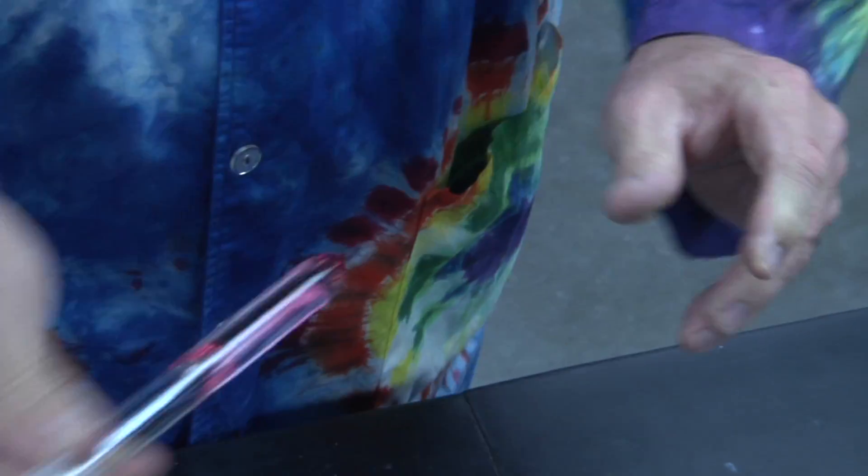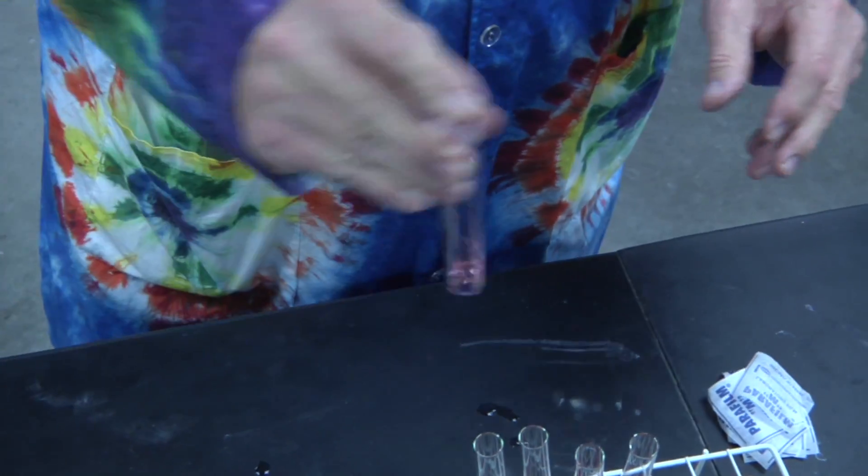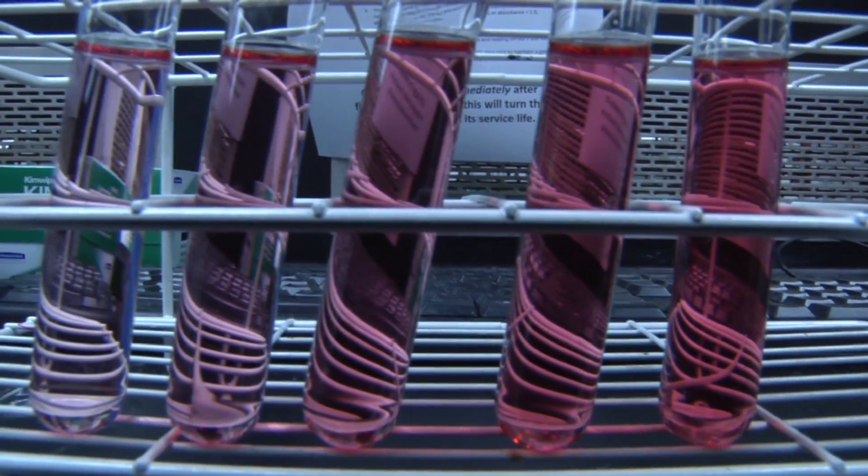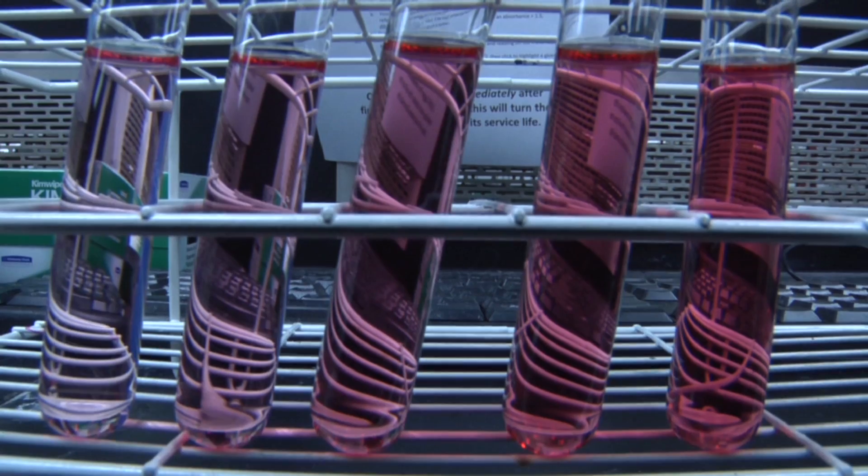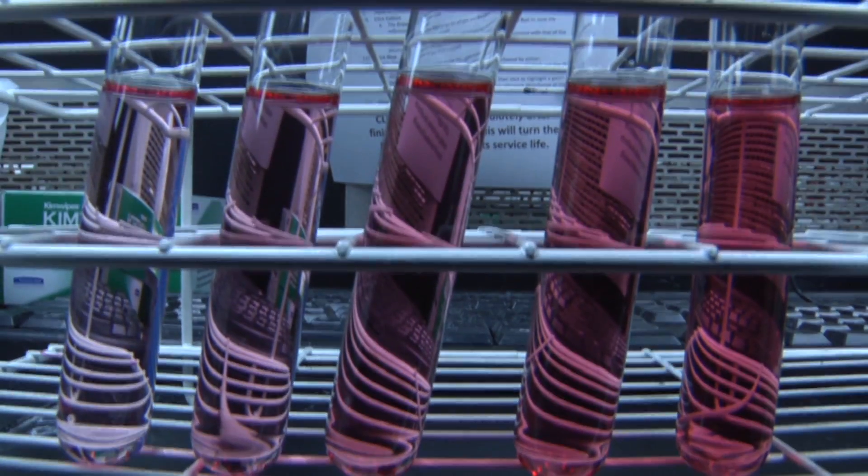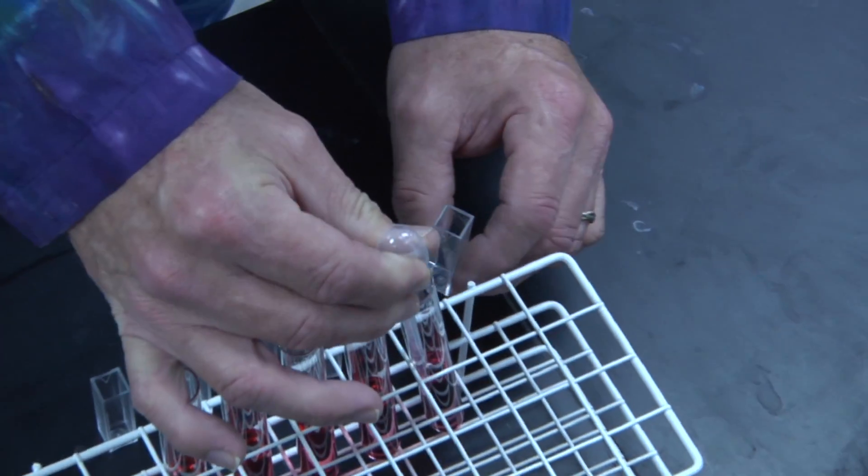Next cover the test tubes with parafilm and invert multiple times to mix the contents. When you are done, you should have a series of test tubes all with the same volume of solution but each with a different concentration.